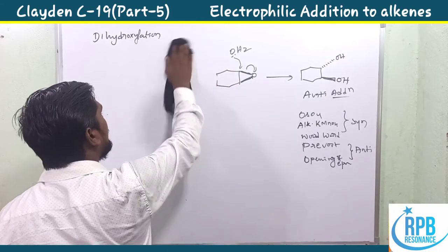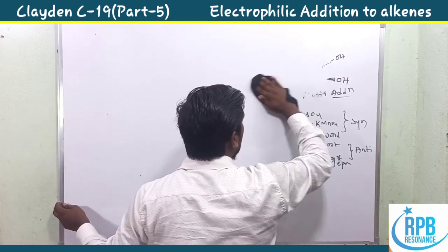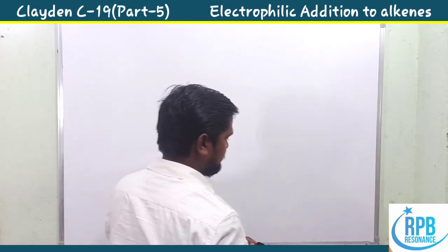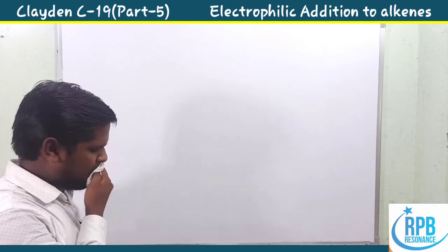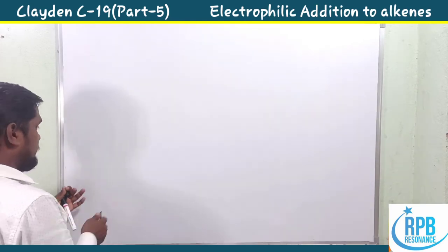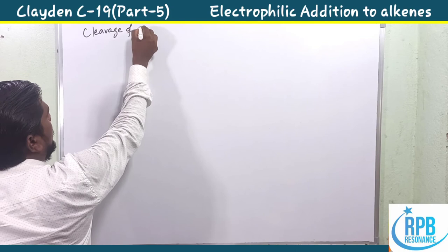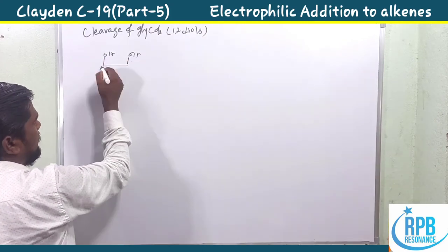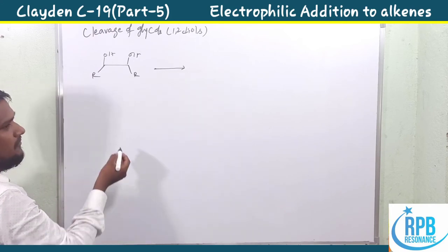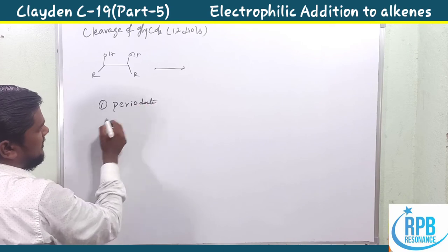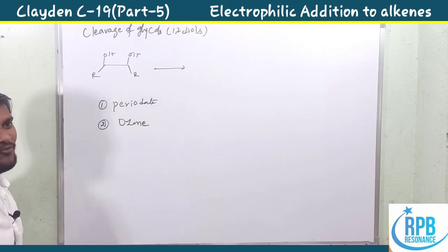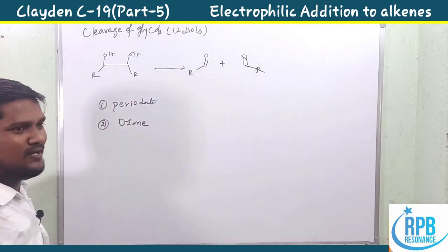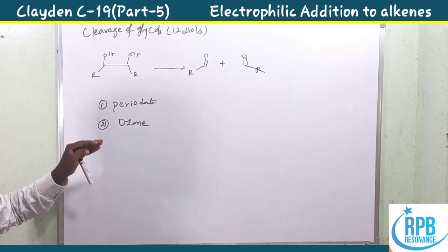Now let's move on to the cleavage of these dihydroxyl groups — that is, the cleavage of glycols or 1,2-diols. There are two types of cleavages: periodate cleavage and ozonolysis. After cleavage, both give corresponding carbonyl compounds.